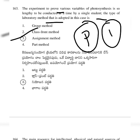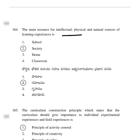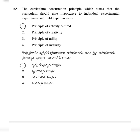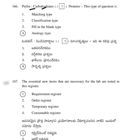The main resource for intellectual, physical, and natural sources of learning experience is — option 2: society. The curriculum construction principle which states that the curriculum should give importance to individual experimental experiences and field experiences — option 1: principle of activity-centered learning. Carbohydrates to proteins — this type of question is analogy type — option 4.